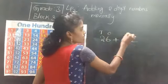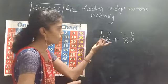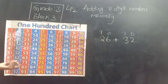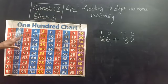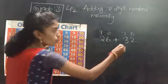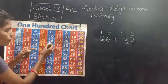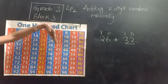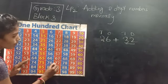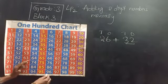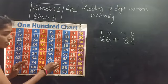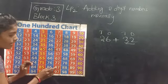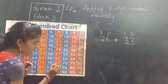I want to add 26 and 32 using the 100 chart. Both are 2-digit numbers. So 26 plus 32 — where is 26 on the 100 chart? Here is 26. And I want to add 32. When you are going down from 26, the numbers increase by 10 every time. When you go up, the numbers decrease by 10. So 97 minus 10 is 87, and 87 minus 10 is 77 — only the 10s place is decreasing.